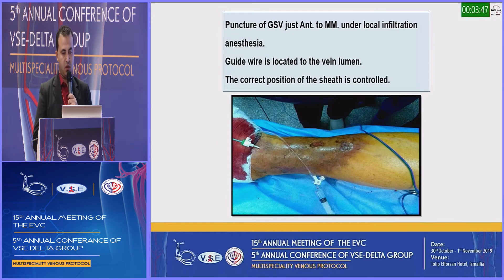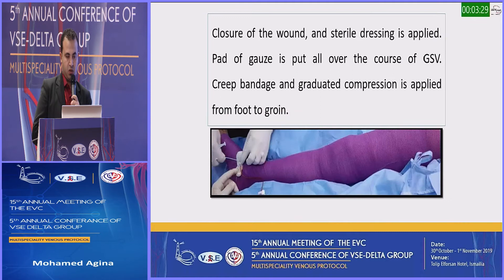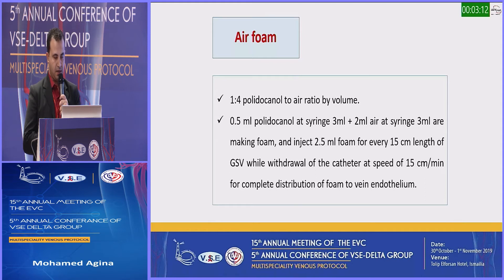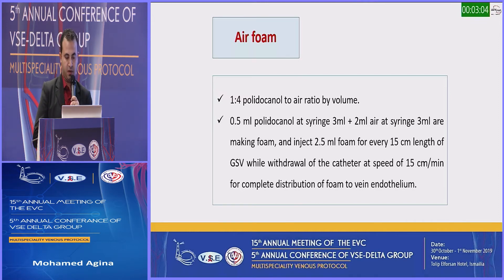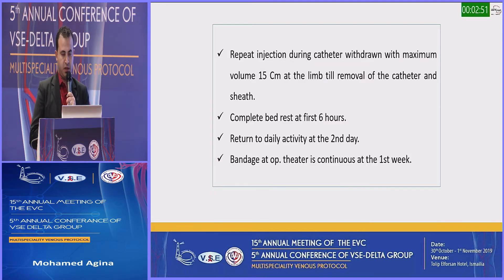The great saphenous vein is entered at the medial malleolus under local filtration anesthesia. A guidewire is located in the vein lumen and correct position of the sheath is confirmed. Introducing the catheter to the groin, then the zinc catheter, wire removal, and withdrawal of the catheter 2 cm from the saphenous stem. Closure under vision. Foam and sterile dressing is applied and a bandage is placed over the course of the great saphenous vein. Inelastic bandage or graduated compression is applied up to the groin. Air foam at 1 to 4 polidocanol to air ratio by volume: 0.5 ml polidocanol at 7 plus 2 ml air at 7 ml, making foam and injecting 2.5 ml foam for every 15 cm of the length of the great saphenous vein. Catheter withdrawal at speed of 15 cm per minute for complete distribution of foam to the vein endothelium. Repeat injection as catheter is withdrawn, with maximum volume 15 ml per limb, until removal of the catheter and sheath.